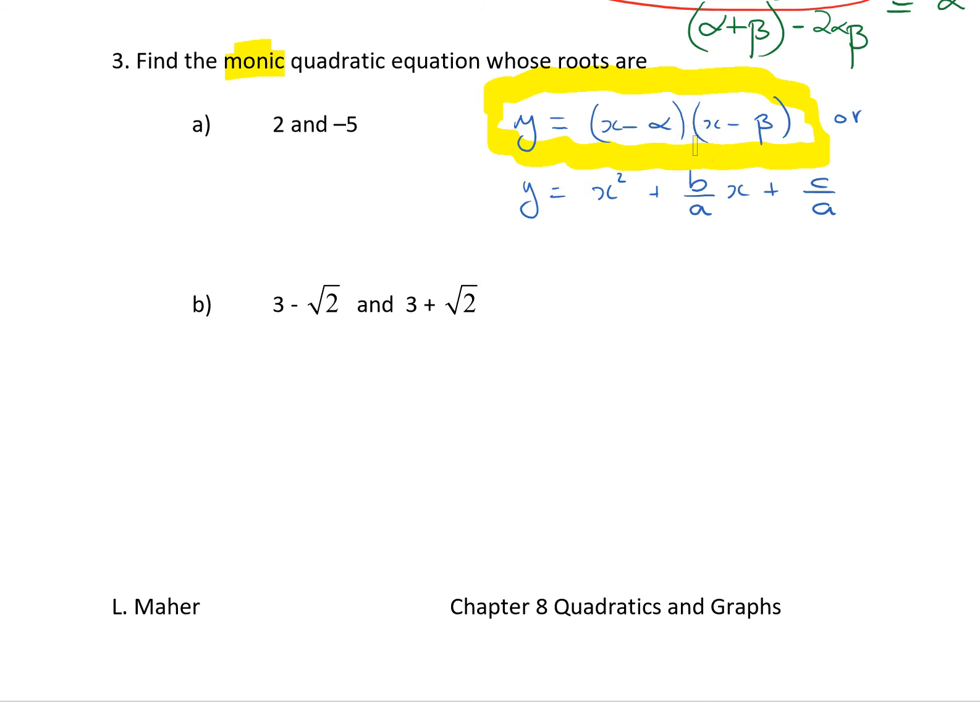Where alpha and beta are the roots, which is what you're given here in this question. Or, also keep in mind that it could be written as x squared plus b on a, x plus c on a. That's when we've got it in a format such that it is not monic.